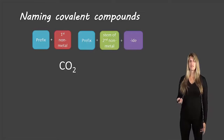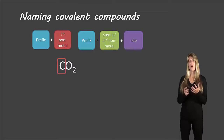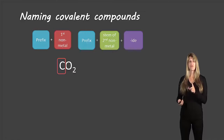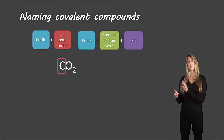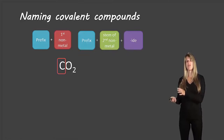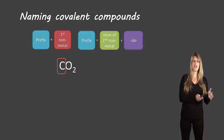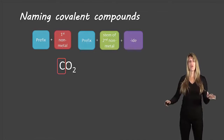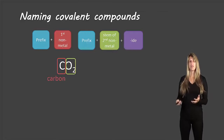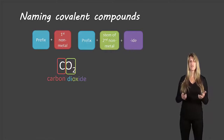Now let's look at some exceptions. Here we have CO2. Carbon doesn't have a subscript — it's on its own. Normally no subscript means one, and the prefix for one is mono. However, if the first element does not have a subscript, we ignore the prefix mono. We only use mono when it is the second element that has one. If it's the first element, we don't write a prefix at all. So we have carbon with one atom and oxygen with two. We write carbon — not monocarbon — and di-oxide. So the name is carbon dioxide.